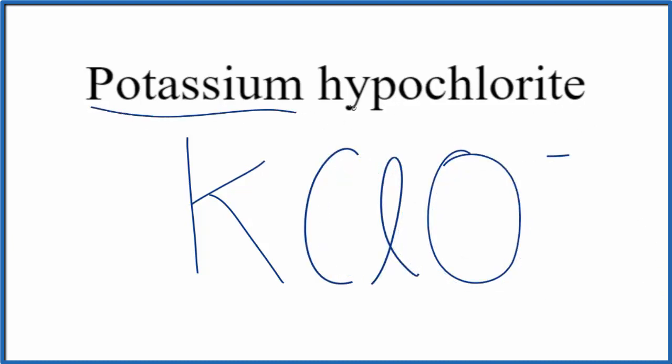Since potassium is a metal, and then we have the hypochlorite polyatomic ion, it's a group of nonmetals, this is an ionic compound, so we need to make sure the charge is balanced.